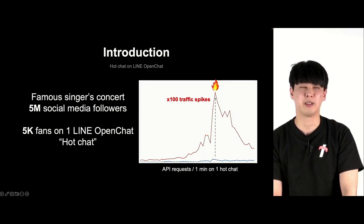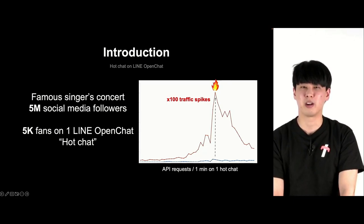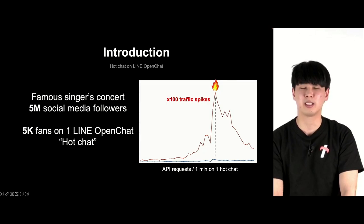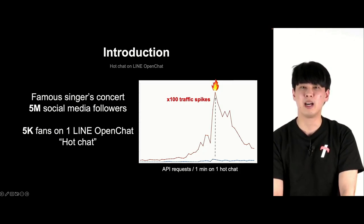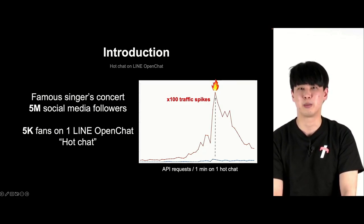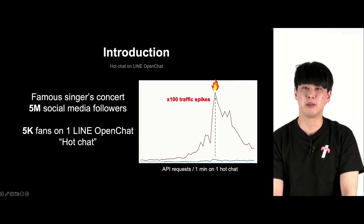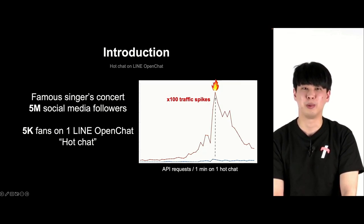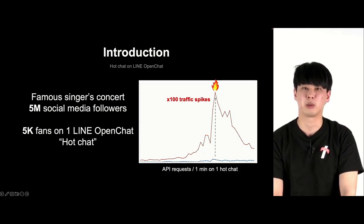Let me first talk about what I will be covering in my presentation. There is a famous singer who has millions of followers, and for the concert of this singer, fans have joined an open chat. Thousands of users join the open chat and send and receive many messages, so the traffic surges more than 100 times in one open chat. The open chat server team calls these chats hot chats. I would like to share the actual patterns of hot chats, some problems that occurred, and how these problems were solved.